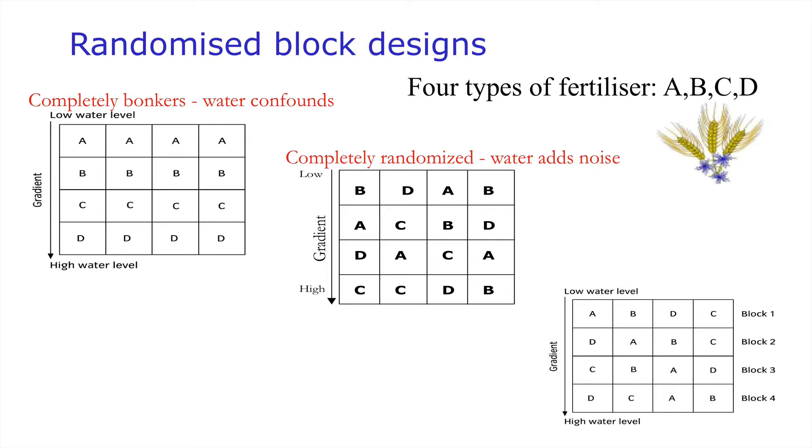Here is the far superior design in which we actually control for the gradient at the same time as investigating its effect. In this particular design what we have is each of the four levels of the fertiliser represented for each of the ranges of water levels that we have from low to high level. So in this case we have structured our design such that we can separately analyse for the effect of fertiliser and yet at the same time look at the effect of the water gradient. So this is a randomised block design.